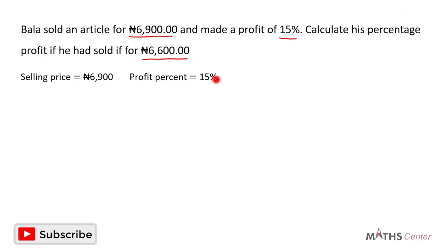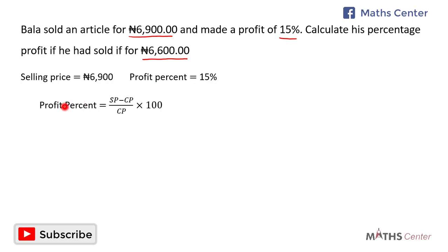The profit percent was 15%. We know that profit percent is equal to selling price minus cost price, divided by cost price, times 100. Using this formula, we can find the cost price of the article.